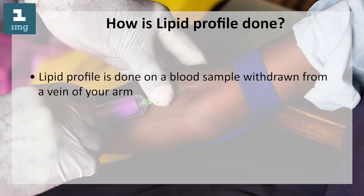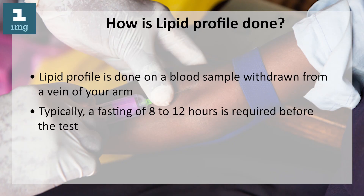How is a lipid profile done? The lipid profile is done on a blood sample withdrawn from a vein of your arm. Typically, a fasting period of 8 to 12 hours is required before the test.